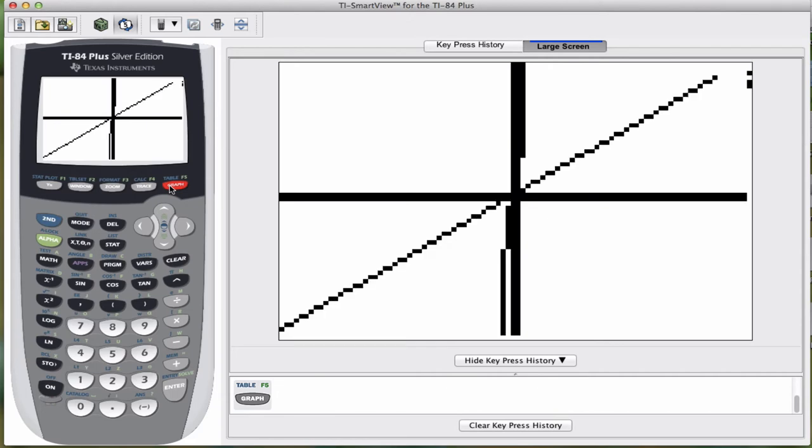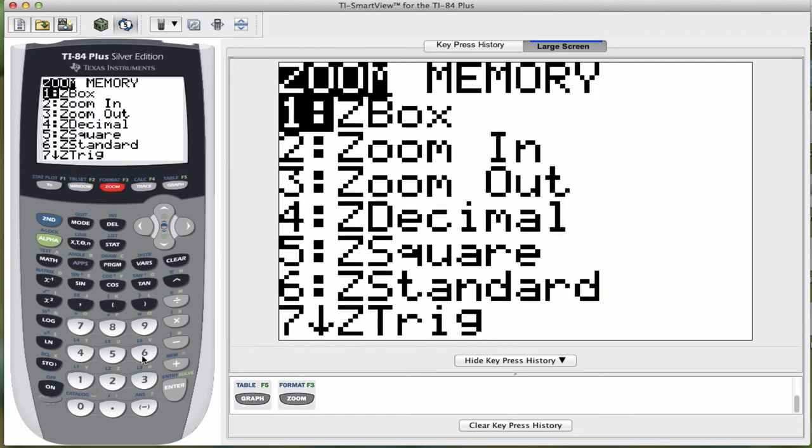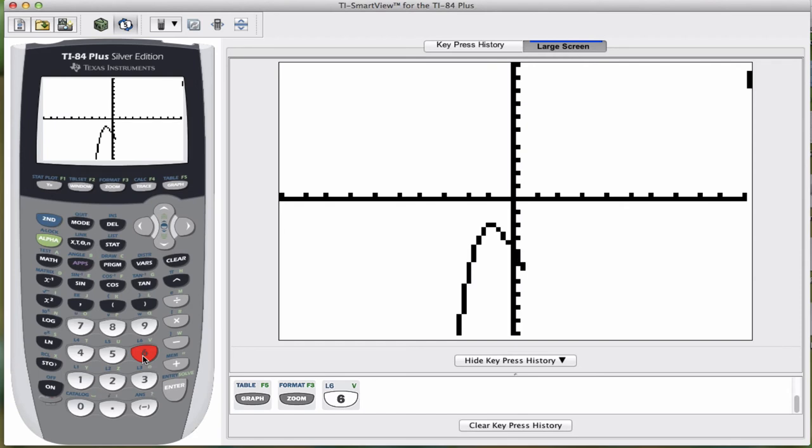And now I'm going to go ahead and press graph. And what you guys can see is that even though this is the same function, it looks very, very different from what we saw when we did zoom 6. So that's why it's important for us to just be aware of what our window is. The other way that we can zoom in or out is by using the zoom function. So I'm going to do zoom 6 again just to give us that pretty picture.